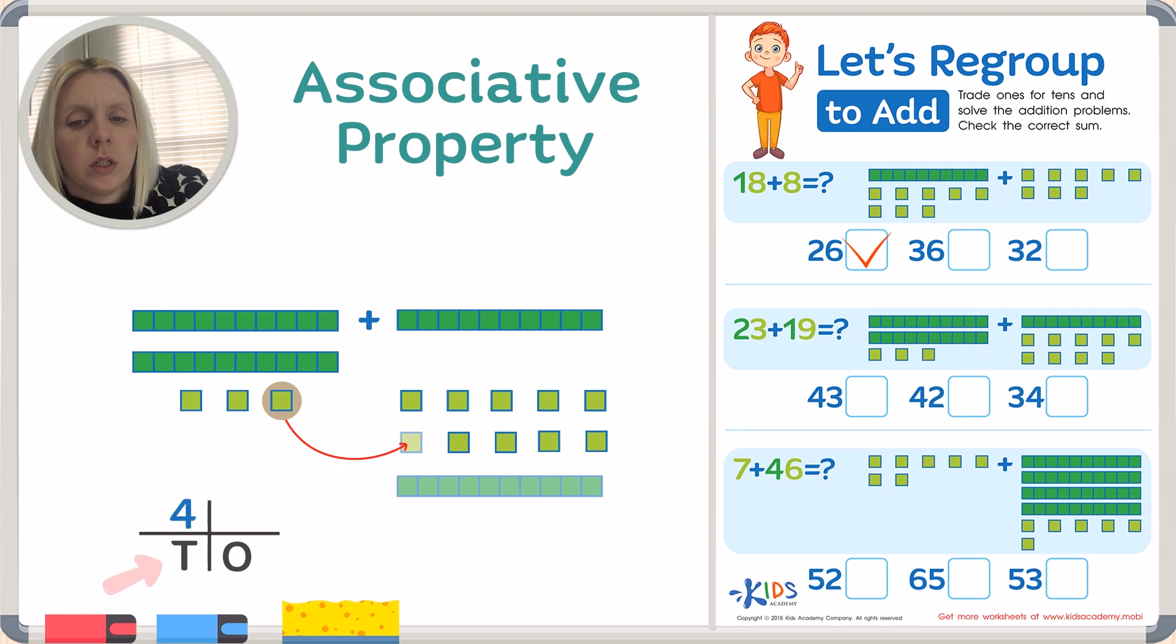But we want to take all these individual units and turn them into another 10. There's 9 units here, so 9 plus 1. We take one from here, bring it over, and change the whole thing into a 10. Now we've got 1, 2, 3, 4 tens, and how many ones? 1, 2. So we've got 2 ones, which gives us 42. I'm going to put a check next to 42. That was pretty easy, wasn't it?